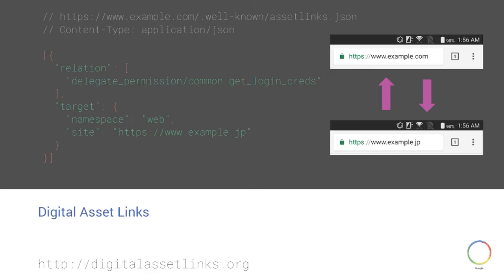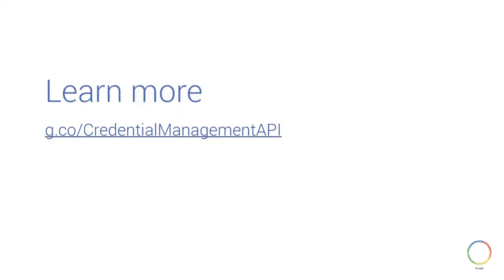This is necessary when you want to run single sign-on and obtain a credential from the origin where the user signed in. Large companies' single sign-on solutions should appreciate this. For subdomains, you don't have to do anything extra. But for entirely different domains, you need something called Digital Asset Links — by putting a JSON file at the path /.well-known/assetlinks.json, you can specify which origins are connected to which. You can use this to share credentials from website to website, and the same credential information will be shared to other domains. To learn more, visit g.co/credential-management-api.